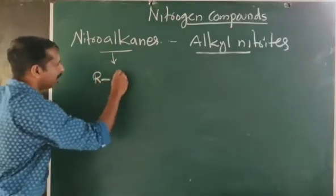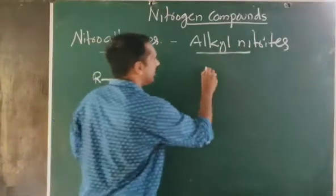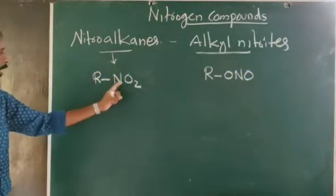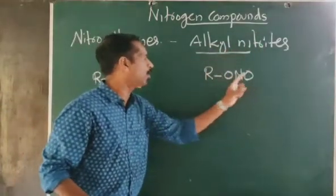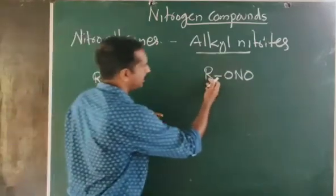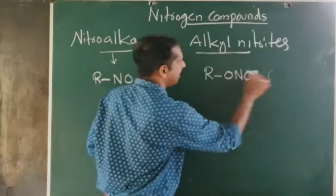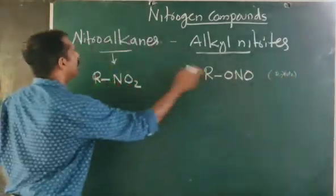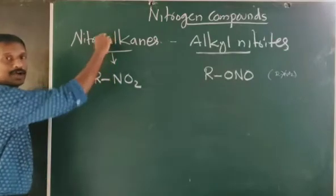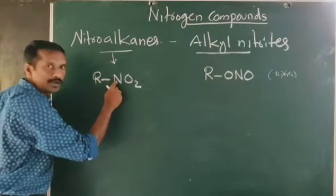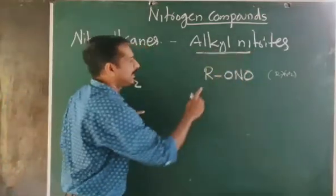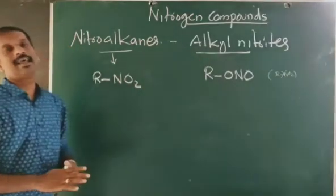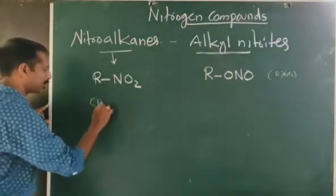What is the general formula of nitro alkanes? The general formula can be written as RNO₂. For alkyl nitrites, the formula is RONO. The difference between these two: in nitro alkanes, the alkyl group is directly attached to nitrogen, but in alkyl nitrites, the alkyl group is directly attached to oxygen.